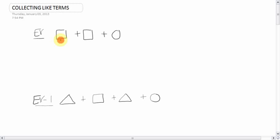Let's say we have square plus square plus circle. Which of these things do you think are like each other or alike? Well, if you said the two squares are like each other, you're right. These two squares are like terms. The square and the circle are not like terms. They're different. You cannot add them.